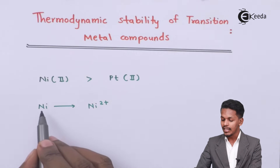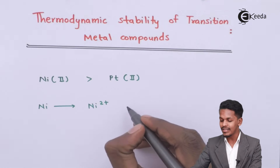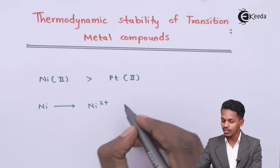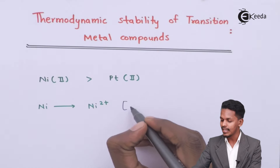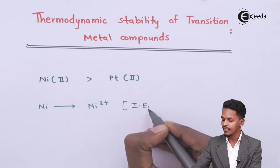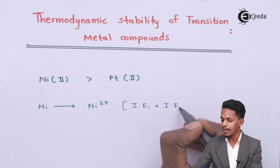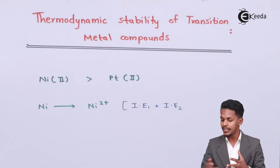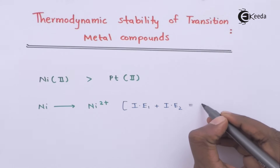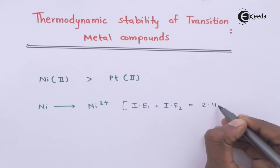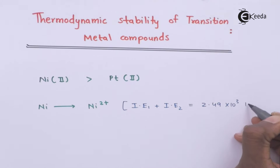In this case, conversion of nickel to Ni²⁺ requires two ionization enthalpies — ionization enthalpy 1 and ionization enthalpy 2. Summing these up, the total ionization enthalpy is found to be 2.49 × 10³ kilojoules per mole.